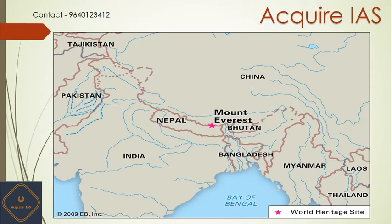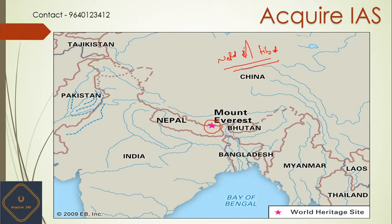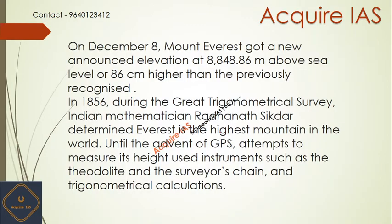The first thing is the location of Mount Everest. It is located near the border of Nepal and Tibet. This is the Mount Everest on the map, this is Nepal, and this is the Tibet region.